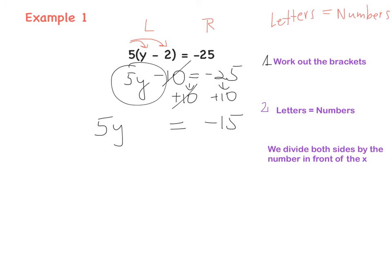Time for the next rule. If we have 5 multiplied by y, we need to divide both sides by the number in front of the y. So divide by 5 and divide by 5. y equals — negative divided by positive is negative — 15 divided by 5 is 3, so y equals minus 3. Done.